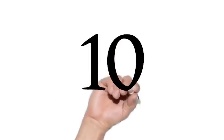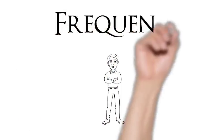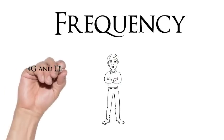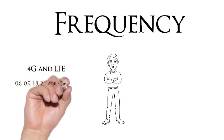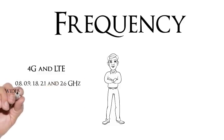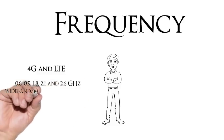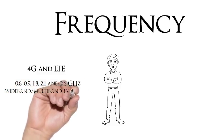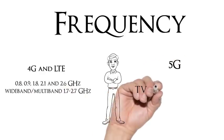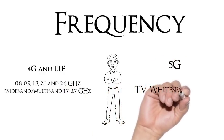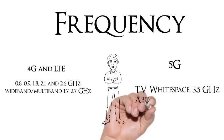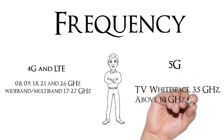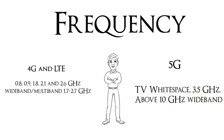Number 10: The frequency. For 4G and LTE, the frequencies of 0.8, 0.9, 1.8 GHz, 2.1 and 2.6 GHz, along with wideband or multiband operation at 1.7 to 2.7 GHz are used. And for 5G, it's the TV white space that is used along with 3.5 GHz and about 10 GHz wideband bandwidth.